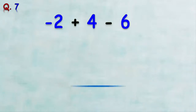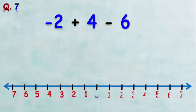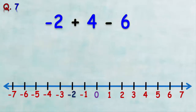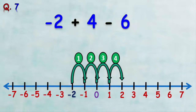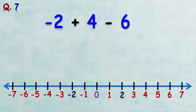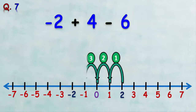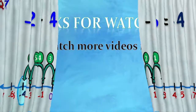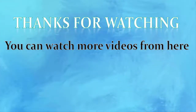Let's see our last example: find negative two plus four minus six. We draw a number line and start at negative two. Then we make four forward jumps: one, two, three, four — we arrive at number two. Then we make six backward jumps: one, two, three, four, five, six. We get negative four, so negative two plus four minus six is negative four. I hope the explanation was clear — thank you for watching and see you next time.